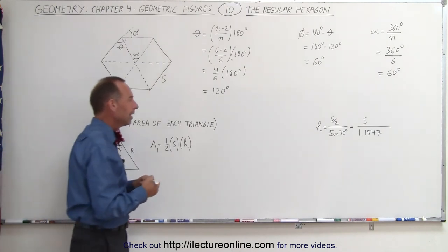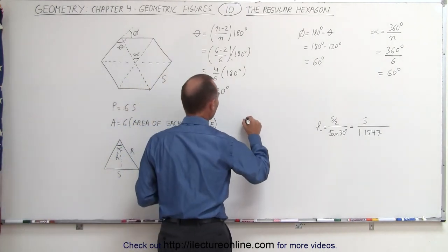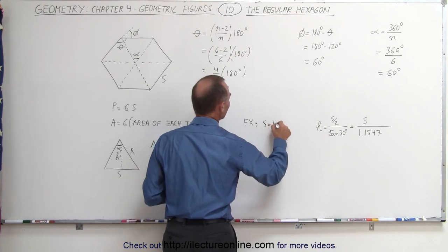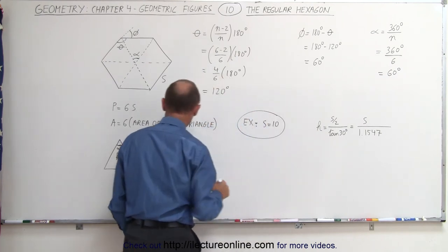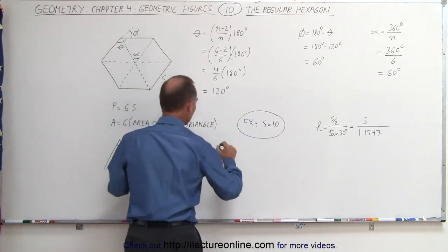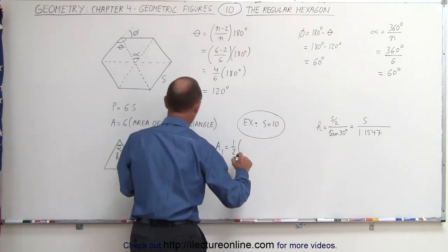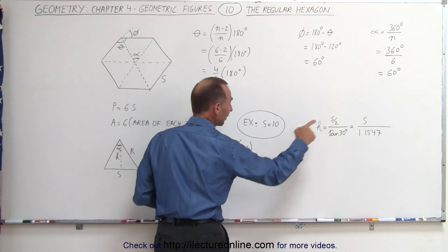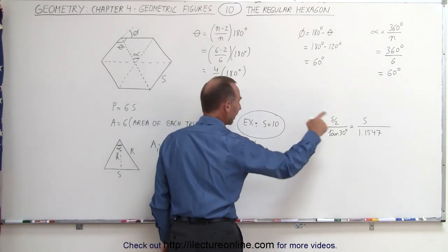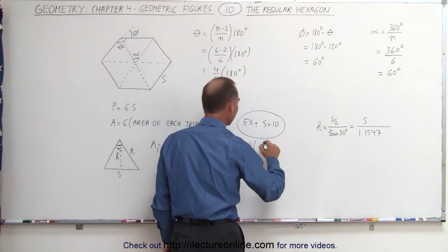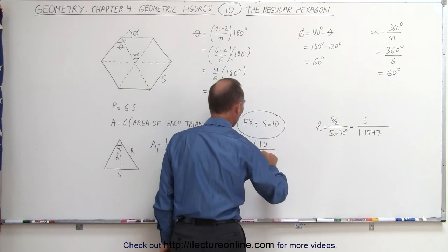Let's do an example. Let's again use, as an example, that S is equal to 10. To do that, we then say that the area of each triangle, A sub 1, is equal to 1 half times 10 times H, and H will be S over 1.1547. S would be 10 divided by 1.1547.